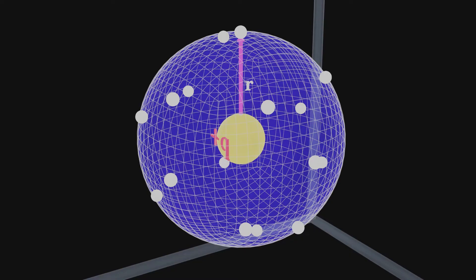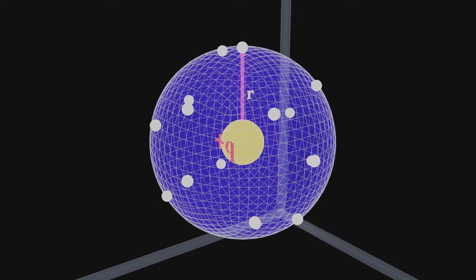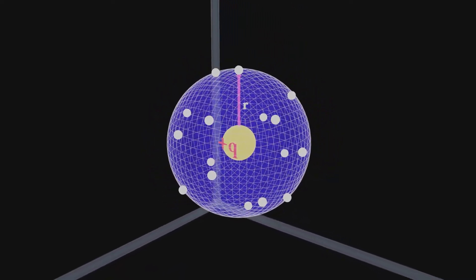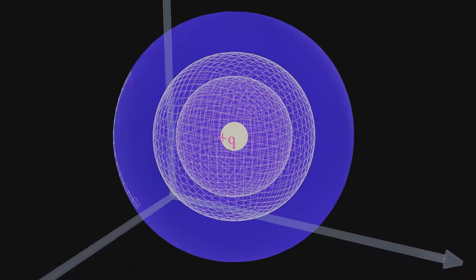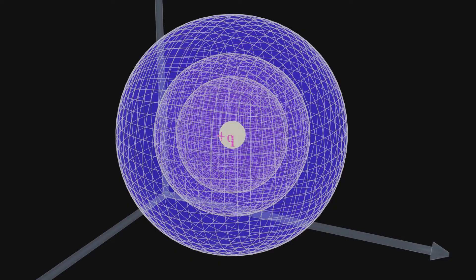At any point on this surface, the potential will remain the same. It is important to note that there is not just one equipotential surface. We can imagine several equipotential surfaces at a fixed distance from the point charge, as you can see in the animation. So an equipotential surface can be defined as any surface where every point has the same potential.